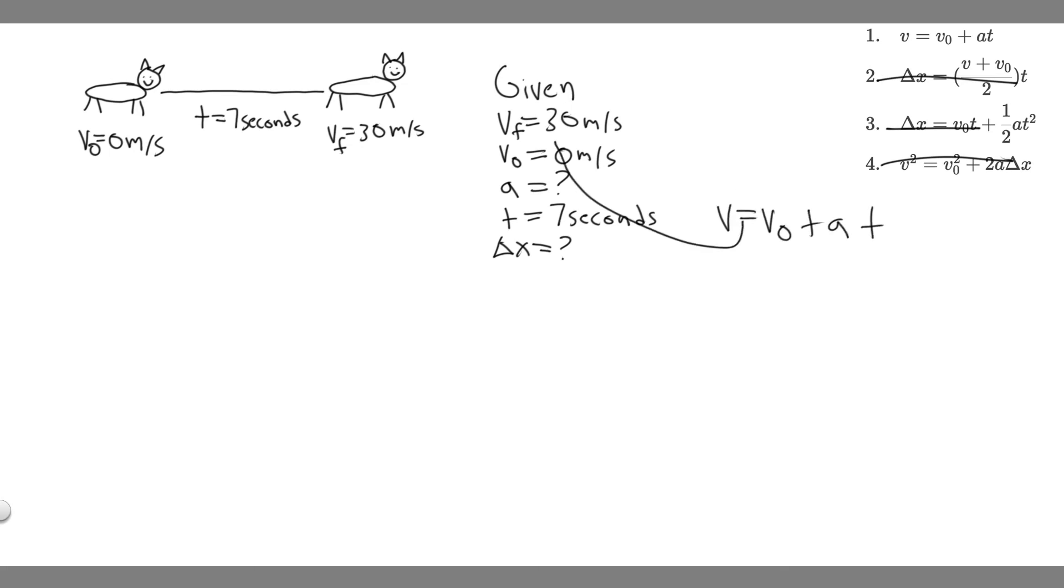Notice we have v, we have v sub zero, and we have t, so we can solve for a since it's the only variable left. So all you want to do is plug it in. So v is 30 equals v sub zero, which is zero, plus a multiply by t. So t is just going to be 7, so you just want to multiply by 7. So this whole side is just going to become 7a.